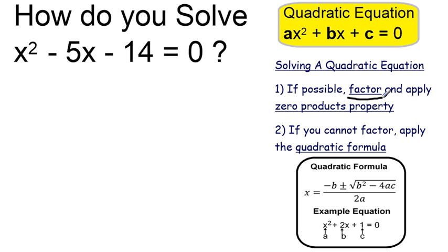I'm going to look at this -14, which is the constant term. I want to see if there's anything that multiplies to give me -14 and adds to give me -5.